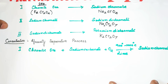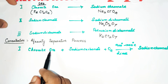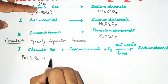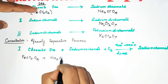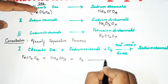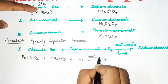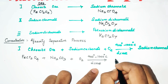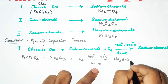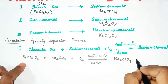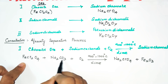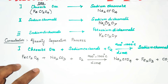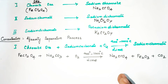Now let's write the equation. Chromite ore formula is FeCr2O4, plus sodium carbonate formula Na2CO3, plus oxygen, heated at 900 to 1000 degrees Celsius in the presence of lime. What is formed? Sodium chromate Na2CrO4, plus iron oxide Fe2O3, plus carbonate salt — carbon dioxide is evolved. So this is the equation for the first step.